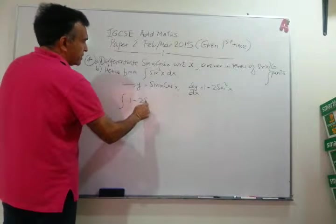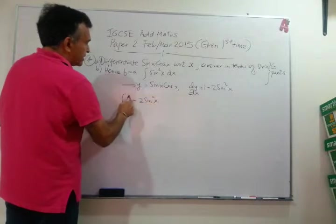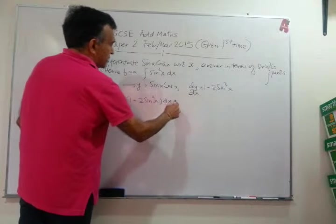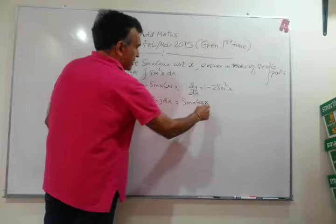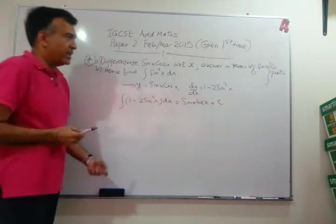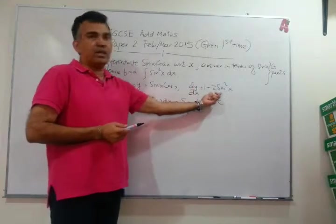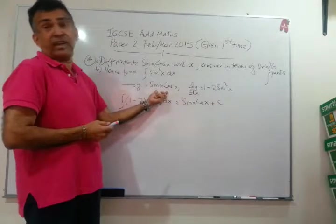So, let's write down: the integral of 1 minus 2 sine squared x dx must be equal to sine x cos x plus x plus c.